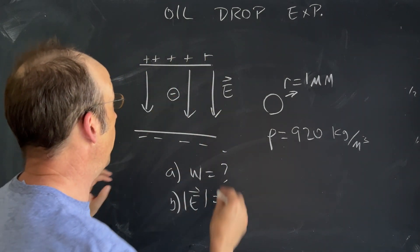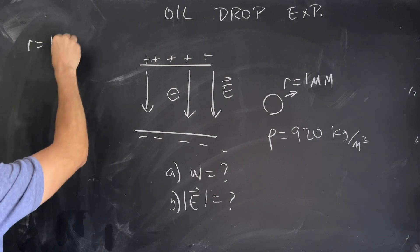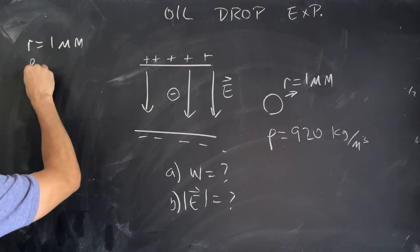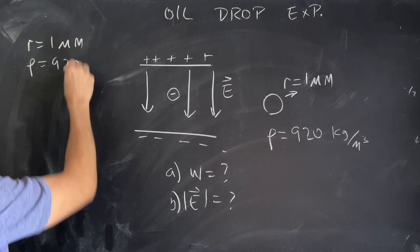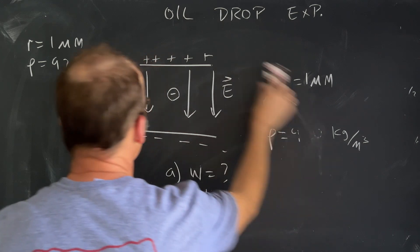Let me write up here some of my things. I know that the radius is one micrometer. I know the density is 920 kilograms per cubic meter. I want to find the weight and the value of the electric field.